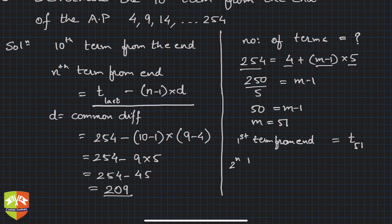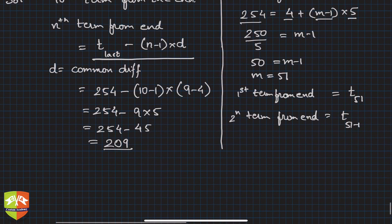Second term from end will be t_51 minus 1, that is t_50. You can note here when this is second, here it is 1. Similarly, third term from end is t_51 minus 2. This is the trend.